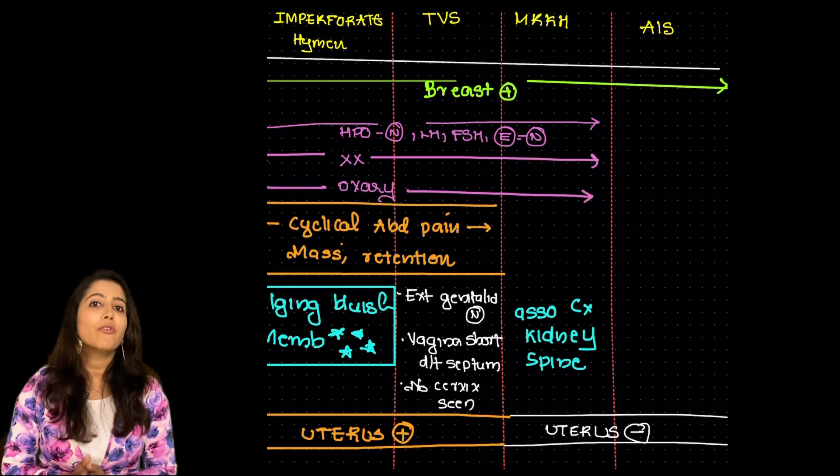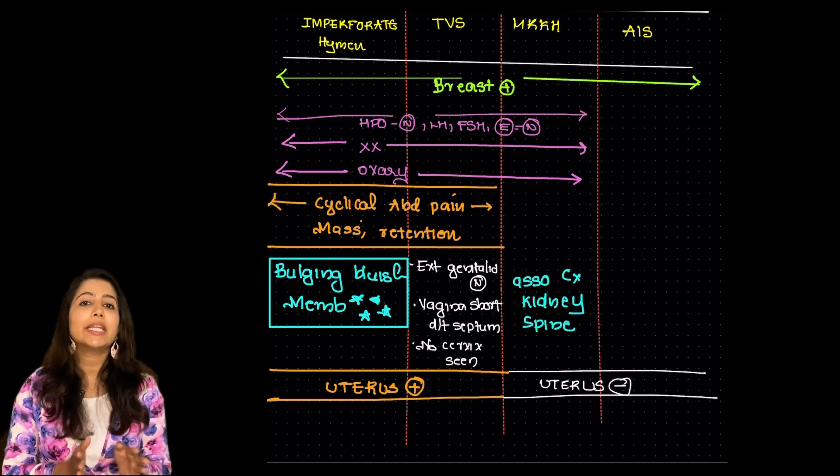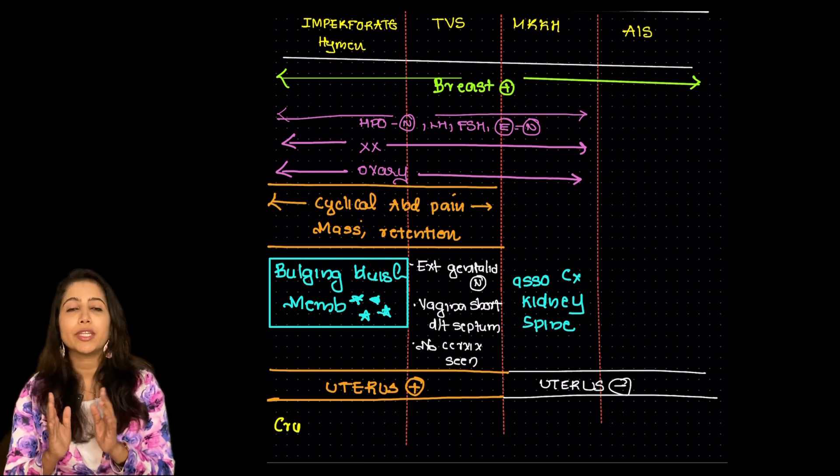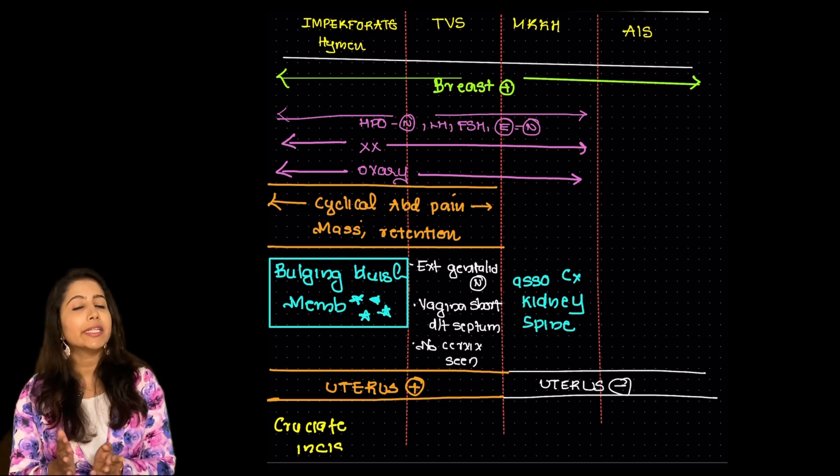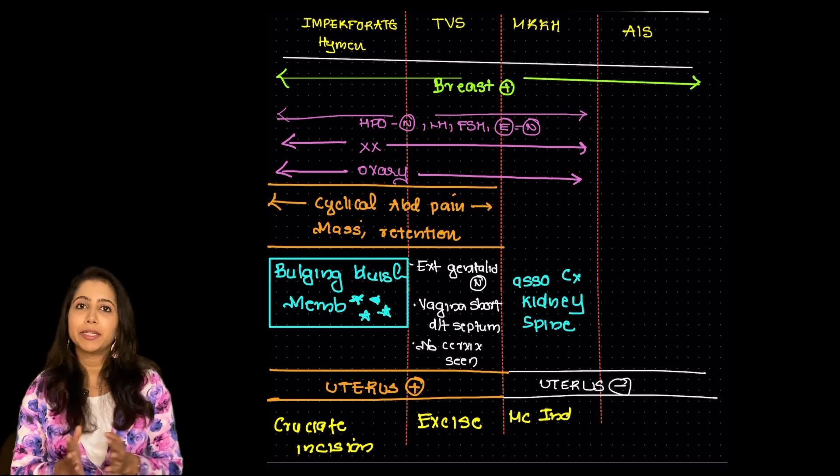How do we manage them? For in case of an imperforate hymen we give a cruciate incision. In case of transverse vaginal septum we are going to excise the septum. In case of MRKH we are going to do vaginoplasty before the woman gets married.